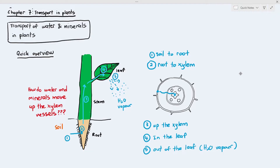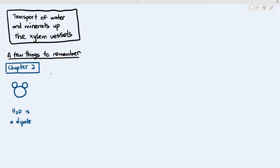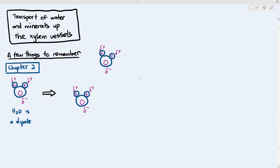Before we talk about how water and minerals move up the xylem, there are a few things to remember and we have to do a little bit of revision. The first important thing to remember is water is a dipole. A dipole means that a water molecule has two charges where the hydrogen atoms have a partially positive charge and the oxygen atom has a partially negative charge.